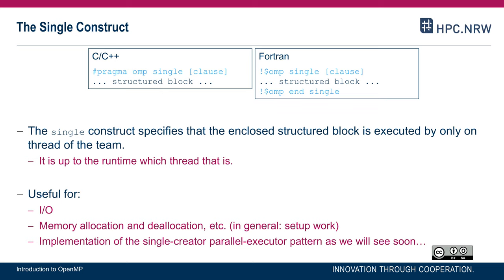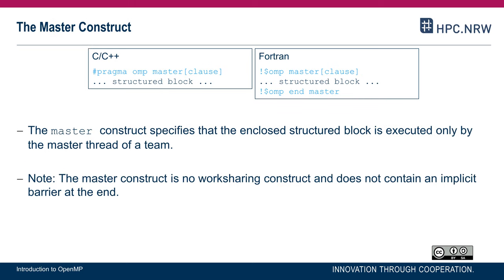The pragma omp master construct differs from single in two ways. First, it is specifically the master thread — the initial thread with ID 0 — that executes the structured block. Second, master is not a work sharing construct, so there is no implied barrier at the end; all other threads immediately continue past it. So: single means one unspecified thread executes it (often the first to arrive, though not guaranteed), with an implicit barrier; master means thread 0 executes it, with no implicit barrier.